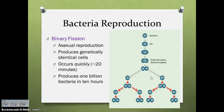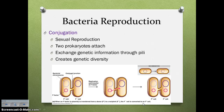Moving on to how bacteria reproduce — bacteria reproduce either sexually or asexually. The asexual reproduction of bacteria is called binary fission, which is basically mitosis: one cell, DNA copies, and then the cell divides to produce genetically identical cells. This happens very quickly — usually around 20 minutes or less — meaning in 10 hours you can produce 1 billion bacteria. Sexual reproduction is called conjugation, where two prokaryotes attach via their pili and genetic information travels through the pili into the other cell, creating genetic diversity.